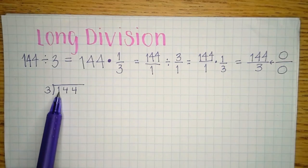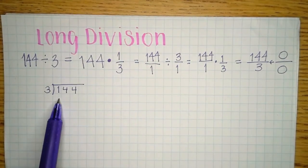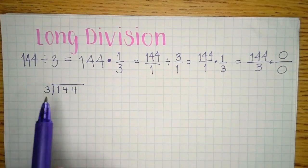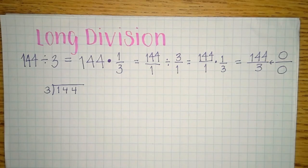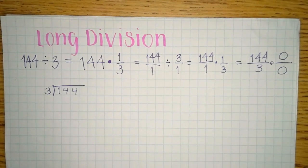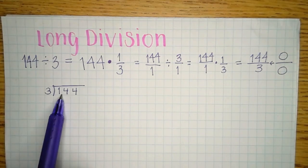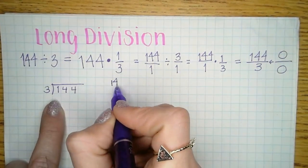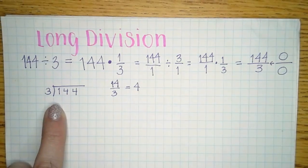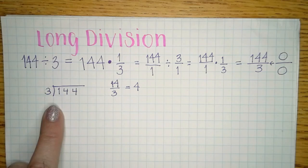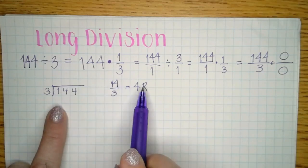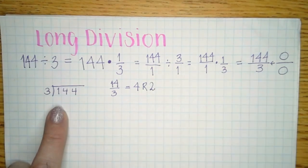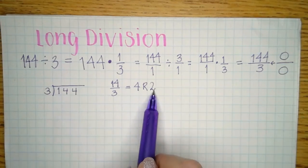When you did long division as a kid, you'd ask: does 3 go into 1? No, so you move over. How many times does 3 fit in 14? Four times. On the side you're really doing 14 divided by 3 — it goes in 4 times with a remainder. Three goes into 14 four times, but how many are left over? Two — because 3 times 4 is 12, and 14 minus 12 is 2. Four remainder 2.